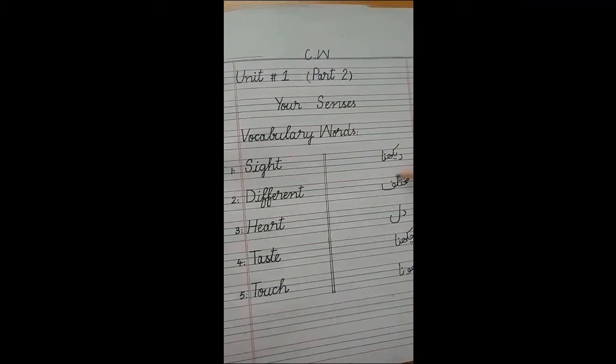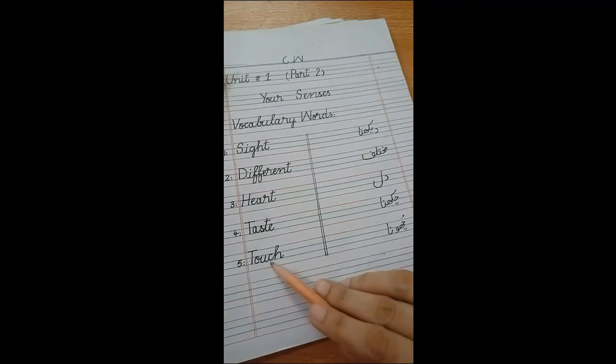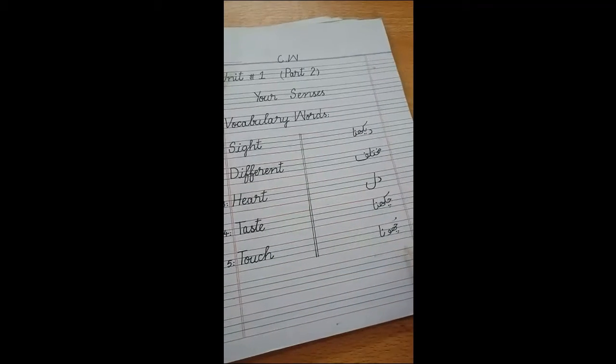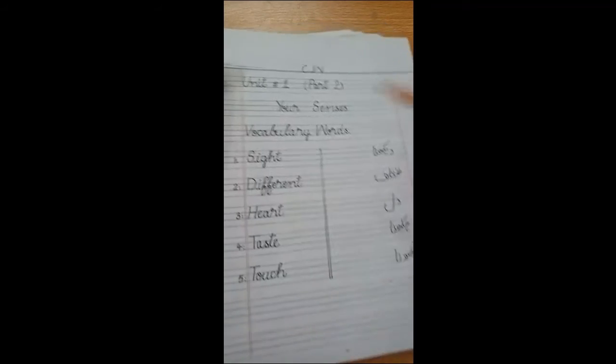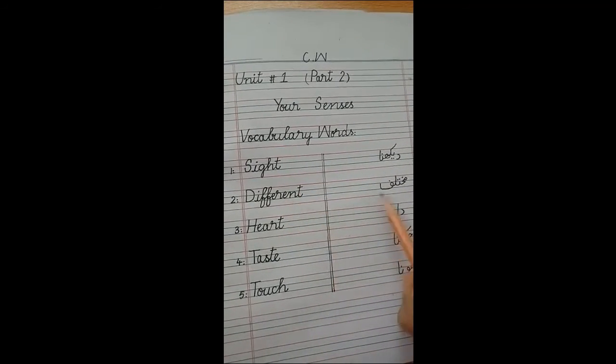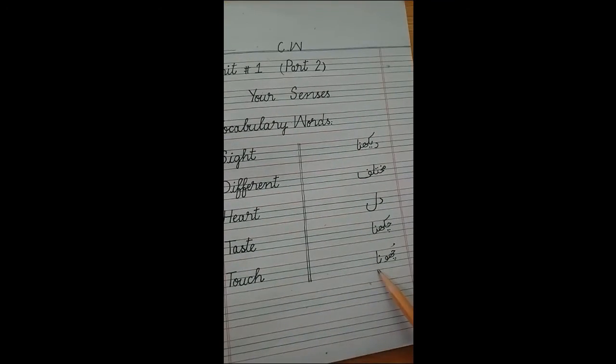Okay, now learn with me. Sight, dekhna. Sight, dekhna. Different, mokhtalif. Heart, dil. Taste, chakkhna. Touch, chuna. Okay, now here is your five words, vocabulary words.